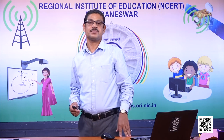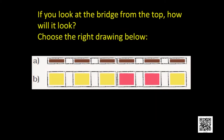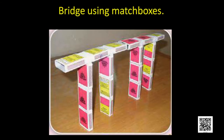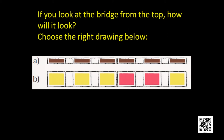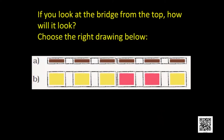Now, this is a bridge made using matchboxes. If you look at the bridge from the top, how will it look? Here, two pictures are given — A and B — and we have to choose the right drawing. If you look at the bridge from the top, in both cases the picture B — you will see the bridge like this. You will only see the flat surface — the upper matchboxes' flat surface. So B will be the correct answer.